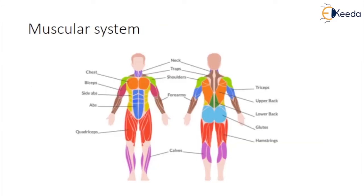Five important muscular system facts: the heart is the hardest working muscle in the body — it pumps 5 quarts of blood per minute and 2,000 gallons daily. The gluteus maximus is the body's largest muscle, located in the buttocks, and helps humans maintain an upright posture. The ear contains the smallest muscle in the body alongside the smallest bones; these muscles hold the inner ear together and are connected to the eardrum. A muscle called the masseter in the jaw is the strongest muscle by weight — it allows the teeth to close with a force of up to 55 pounds on the incisors or 200 pounds on the molars.